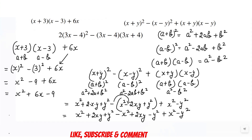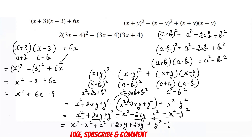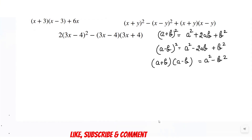Now we write the like terms together — make sure not to change their signs. We have x squared, minus x squared, plus x squared; then plus 2xy plus 2xy; then plus y squared, minus y squared, minus y squared. x squared minus x squared cancels, y squared cancels, leaving x squared plus 4xy minus y squared. The answer is x squared plus 4xy minus y squared.